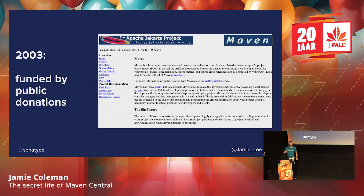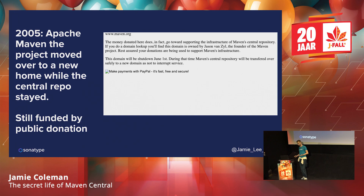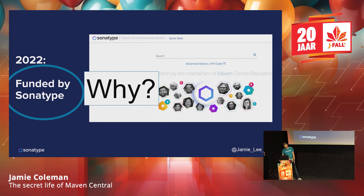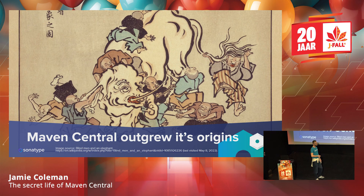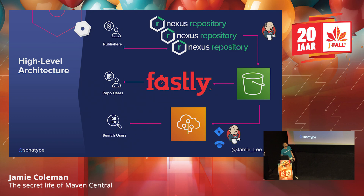So he went about building Maven Central. It was running under a computer under his desk — as you can imagine, it doesn't run there anymore; it runs on AWS, and you can imagine how much that costs. It outgrew its origins. It was funded by public donations at the beginning, but then Sonatype took over running it because it was a very expensive thing to do. The website changed in 2002 — we needed to add some innovation.